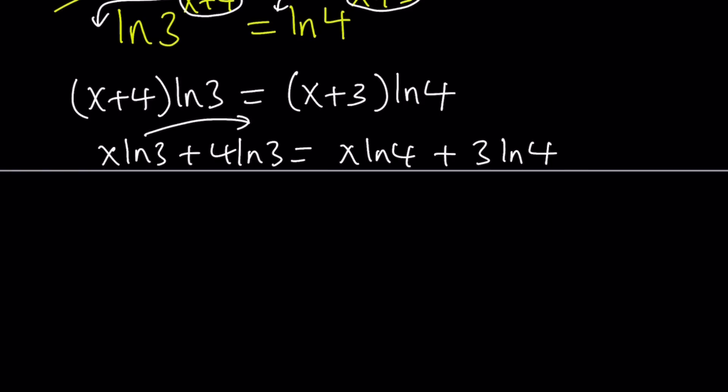I'm going to go ahead and subtract this from both sides and that's going to give me x ln 4 minus x ln 3, and I'm just going to bring this one over here and that's going to be subtracted from 4 ln 3. So it's going to be 4 ln 3 minus 3 ln 4. We put the x terms together and the constants together.